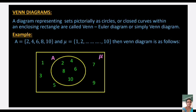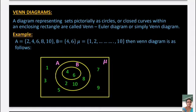Venn diagrams: A Venn diagram represents sets pictorially as circles or closed curves within an enclosing rectangle. For example, if A = {2, 4, 6, 8, 10} and μ = {1, 2, 3, ..., 10}, we draw a rectangle containing all elements 1 to 10, and a circle inside with elements 2, 4, 6, 8, 10. The remaining elements 1, 3, 5, 7, 9 are outside the circle but inside the rectangle.